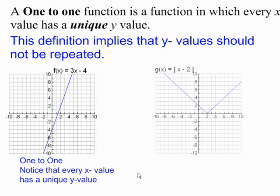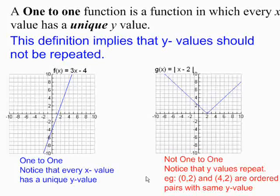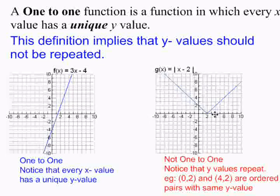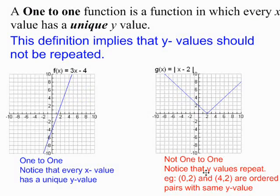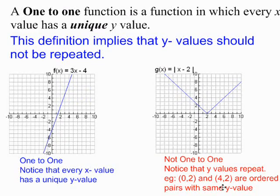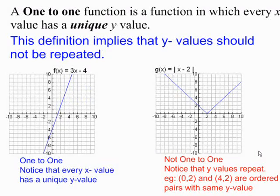Here we have a function that's not one-to-one. Notice that y-values repeat. For example, the point (0, 2) and the point (4, 2) are ordered pairs with the same y-value. That cannot happen in a one-to-one function. Therefore, our second example here to the right is not a one-to-one function.